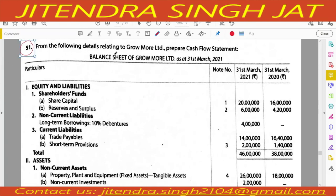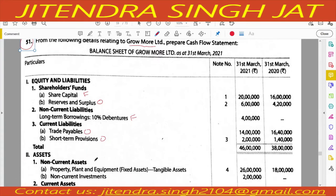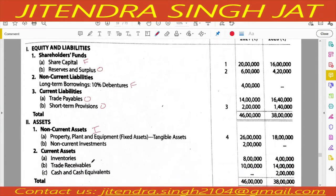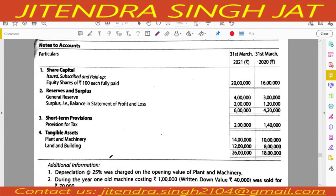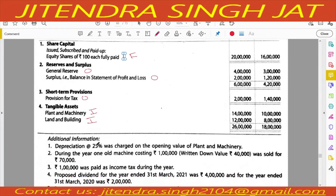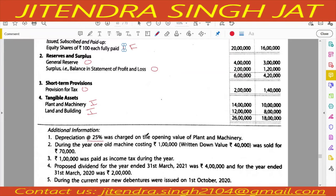Question number 51 - from the following details relating to Grow More Limited, prepare cash flow statement. Share capital goes in financing activity, reserve and surplus in operating activity, long term borrowing in financing activity, trade payable in operating activity, short term provision in operating activity. Non-current assets go in investing activity. Plant and machinery in investing, land and building in investing. Depreciation at 25% was charged on the opening value of plant and machinery - we need to prepare plant and machinery account.